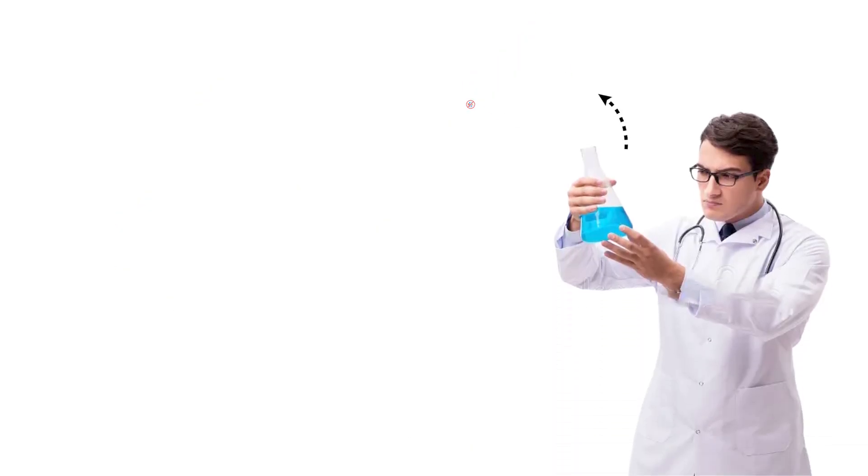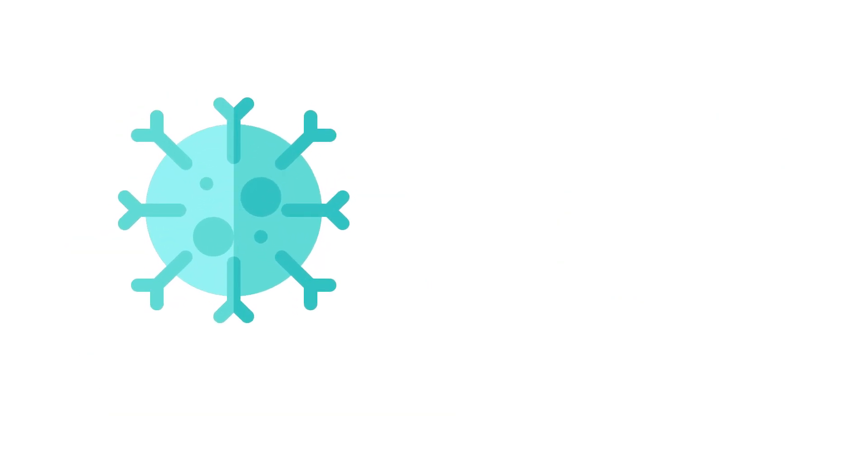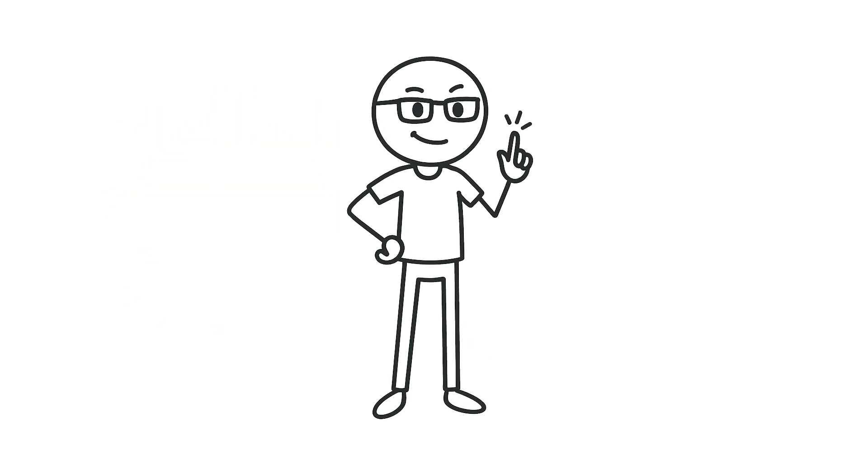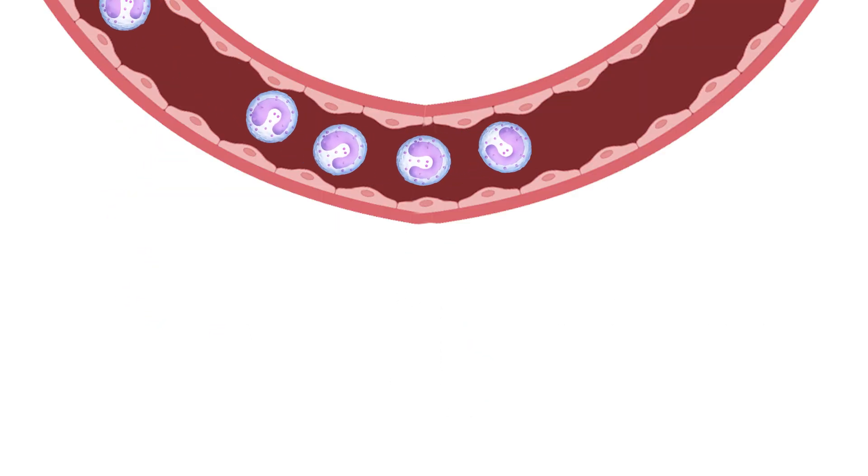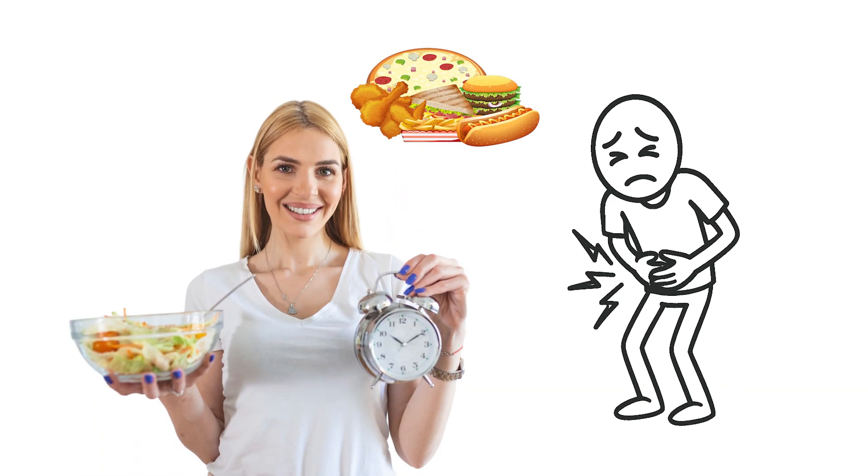Researchers have also found that repeated fasting cycles can help cancer patients recover immune function after chemotherapy and may slow some of the immune system decline that comes with age. But there's a catch. Since the rush of monocytes returning to the bloodstream can temporarily spike inflammation, breaking a fast with a heavy meal can backfire. How you start eating again matters almost as much as the fast itself.